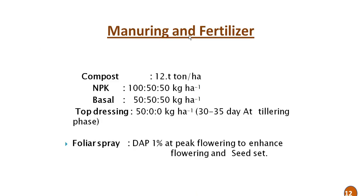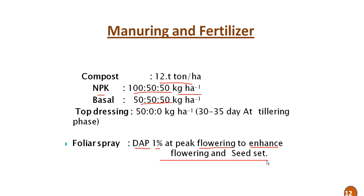Manure and fertilizer: compost at 12 tonnes per hectare. NPK at 150-50-50 kg per hectare, of which 50-50-50 is applied as the basal dose. Top dressing of 50-00 kg per hectare is applied at 30 to 35 days or at the tillering phase. A foliar spray of DAP (diammonium phosphate) at 1% at peak flowering is recommended to enhance flowering and seed set.